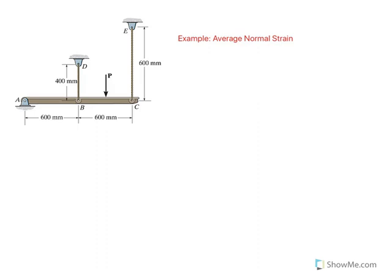So here what's given is that if this guy rotates a very small angle, as I said, 0.02 degrees, we want to find average normal strain, which is denoted by epsilon, in cable BD and average normal strain in cable CE.